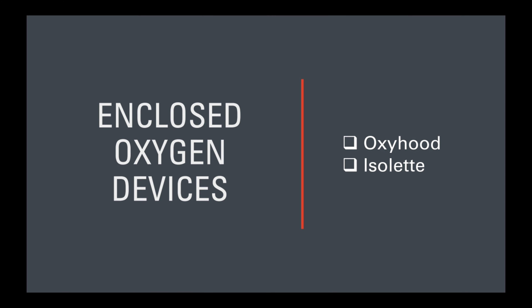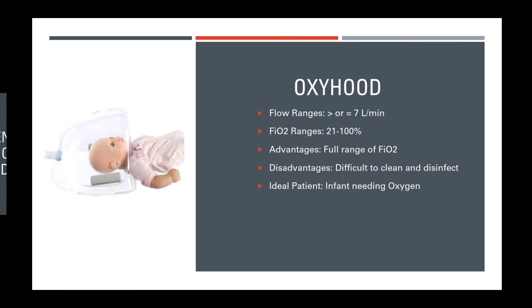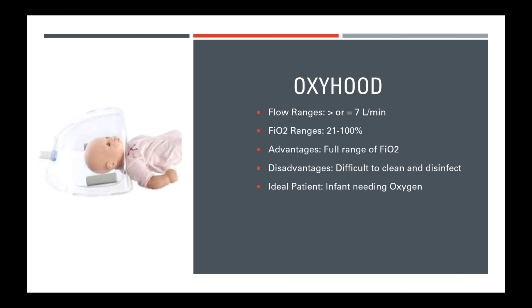The last set are enclosed oxygen devices seen in NICU units and pediatric floors — the oxy hood and the isolette. The oxy hood has flow ranges of greater than or equal to 7 liters per minute to keep CO2 washed out and prevent the patient from rebreathing CO2. FiO2 ranges are 21 to 100 percent. Advantages: full range of FiO2. Disadvantages: difficult to clean and disinfect. Ideal patient: an infant who needs oxygen.